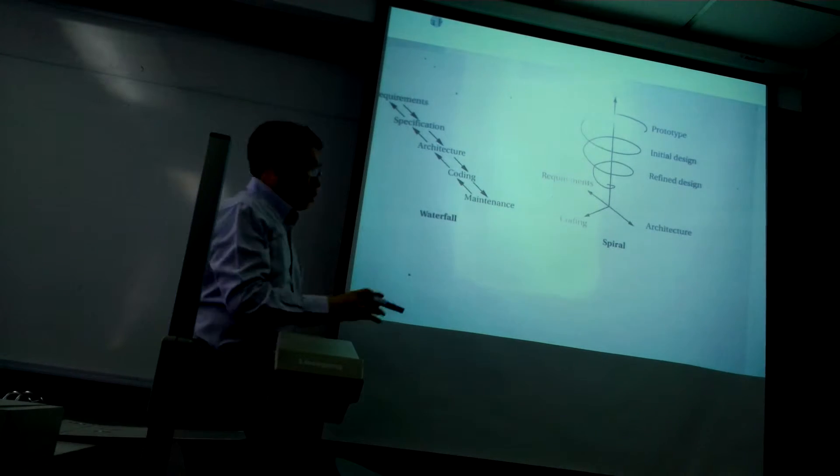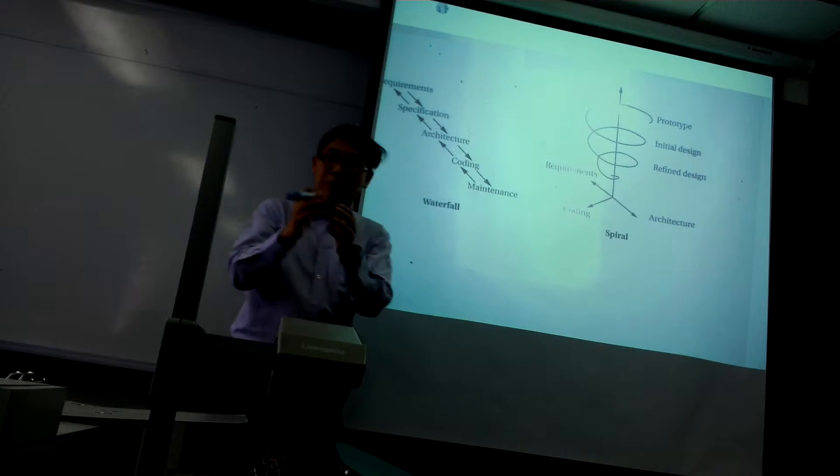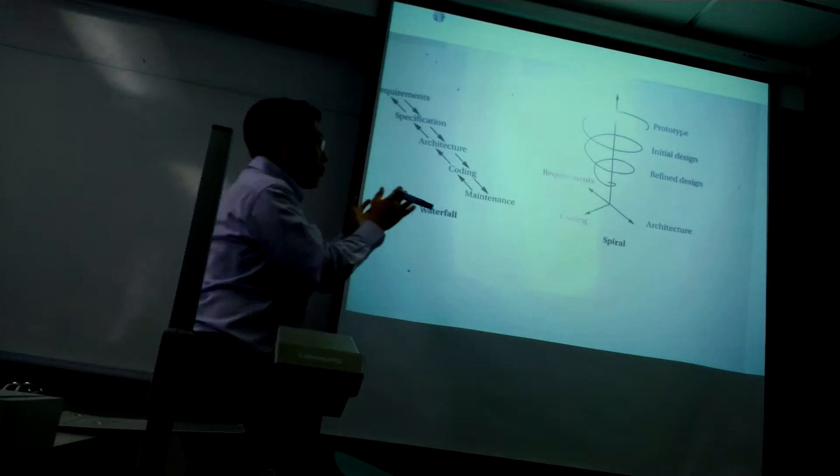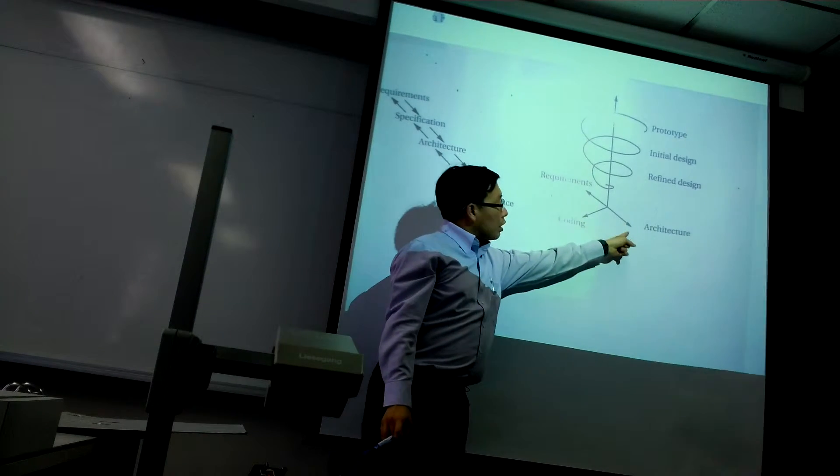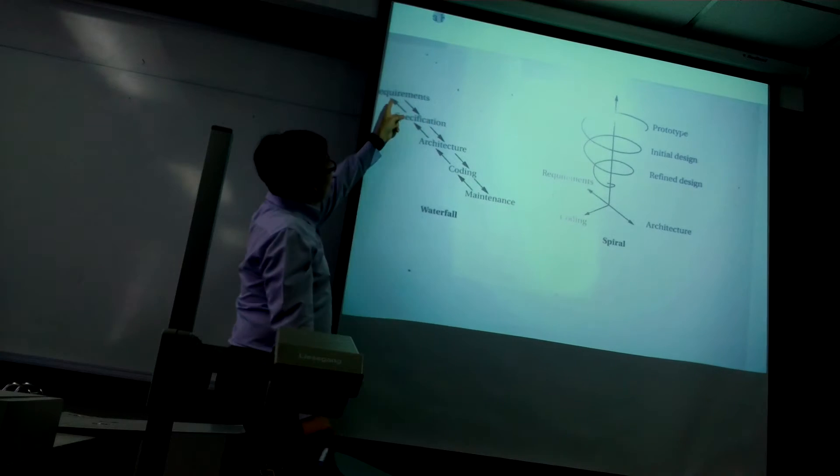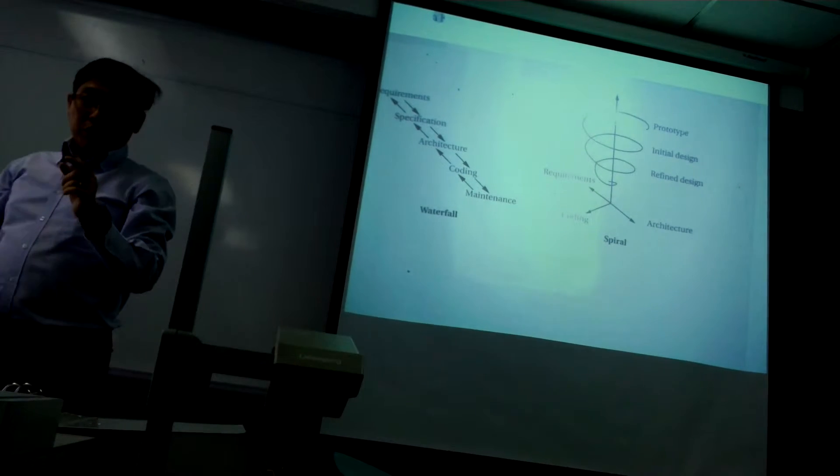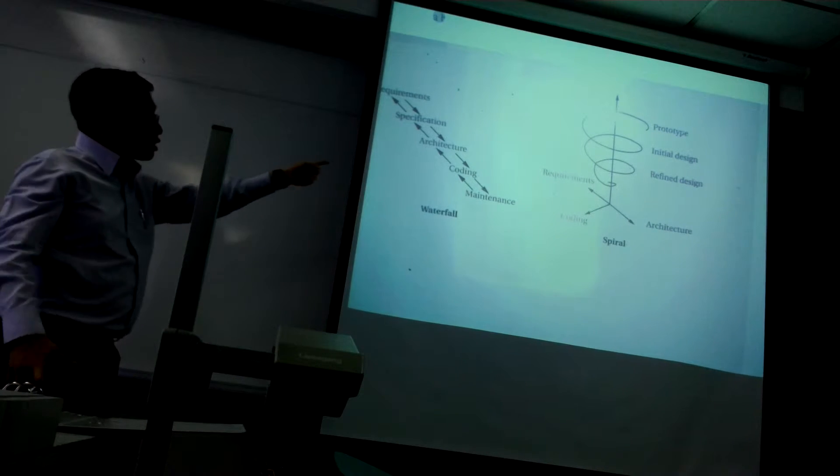During that version, you do a simplified, let's say you want to do a simple mp3 programming, code programming. You do a simplified version. So, you're looking at requirement, architecture, and coding. Basically, this part, requirement, architecture, and coding. So, the spiral itself is a three-dimensional model. It encompasses the waterfall.